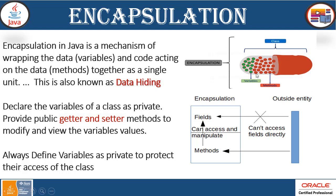In encapsulation, you have a capsule and inside the capsule you have so many things, and you are just protecting those things from the outside entity or outside world. This is what encapsulation is — wrapping the data inside the class. Your class has variables and methods, and you are protecting these things from outside classes. To protect these variables in an application, you can use Getter and Setter methods.